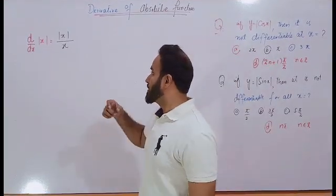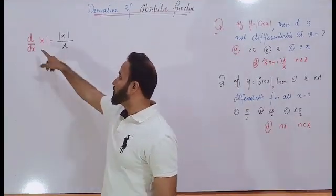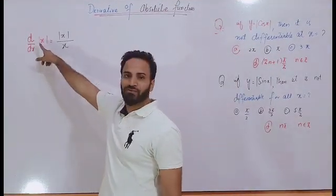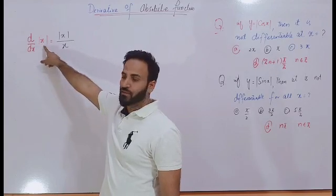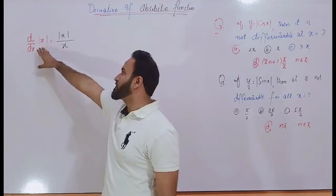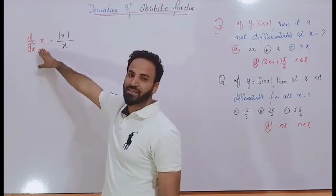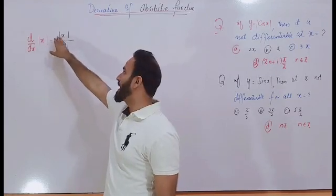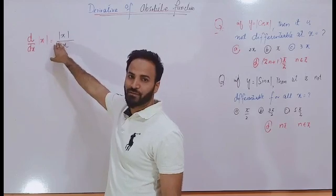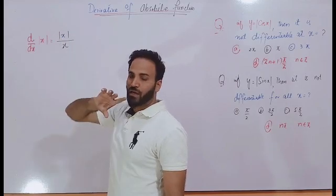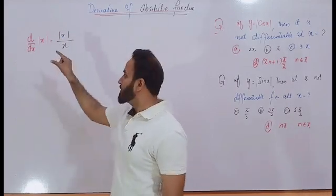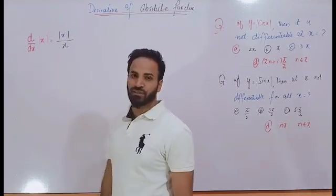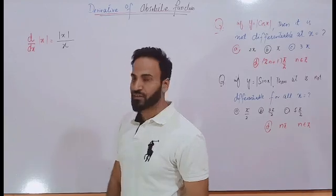Let's take an example. What is the derivative of this absolute function? The derivative of the absolute function |x| is basically equal to |x| divided by x. I am further dividing this absolute function into three cases.